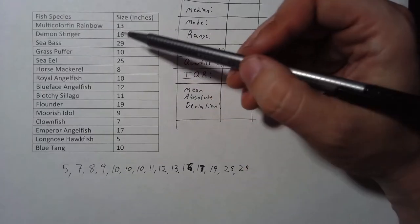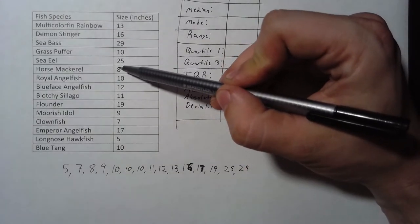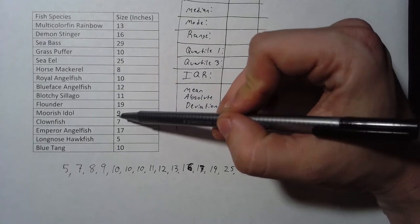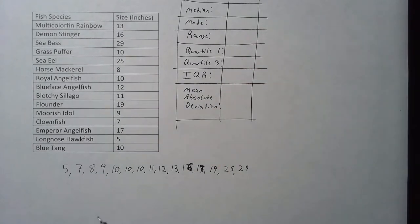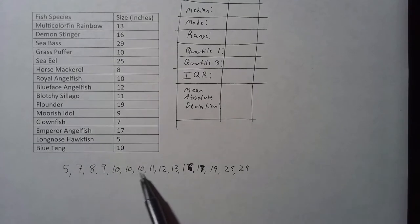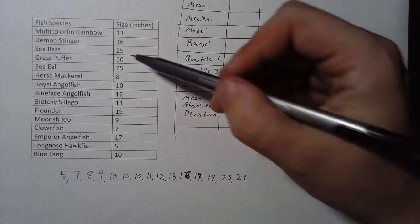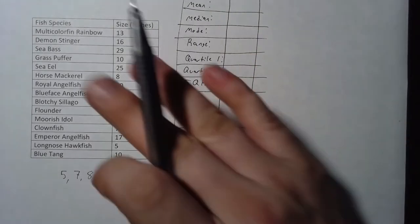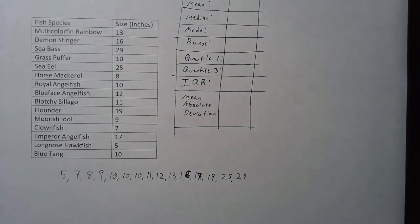Now let's see. I should have 15 numbers down here. [counts to verify] 15 numbers. So I'm all set. This information over here I don't really need, but I'm not going to cross that out now because I need it for later.